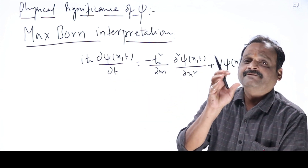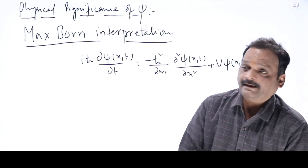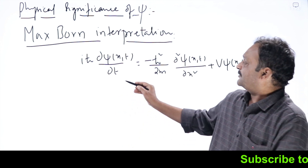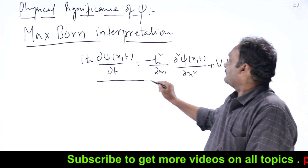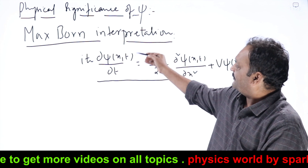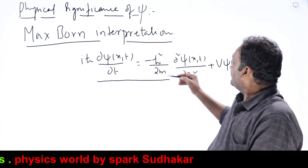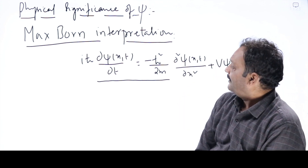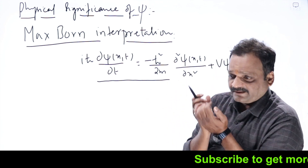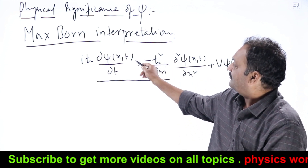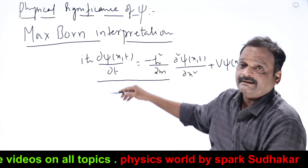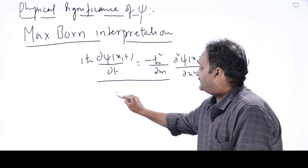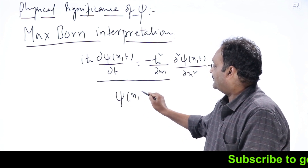Today we are going to see what is the physical significance of the wave function ψ — the Max Born interpretation. We have the Schrödinger time-dependent wave equation in one dimension: iℏ ∂ψ(x,t)/∂t = −ℏ²/2m · ∂²ψ(x,t)/∂x² + Vψ(x,t). Schrödinger derived this equation, and by eliminating t we get the time-independent Schrödinger equation. But still, what is the physical meaning of this wave function ψ?